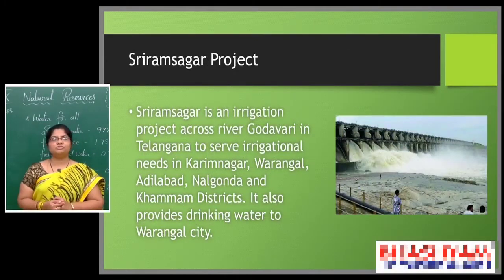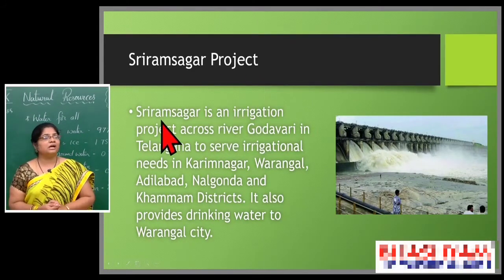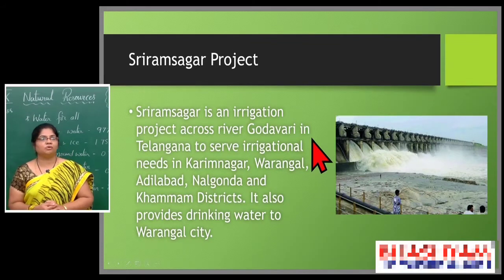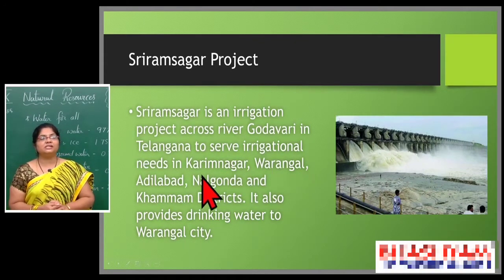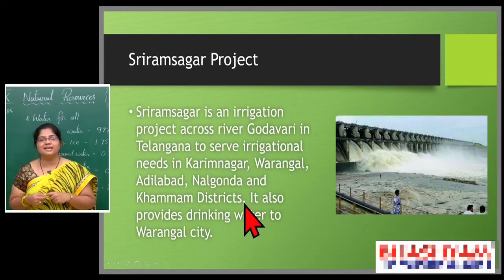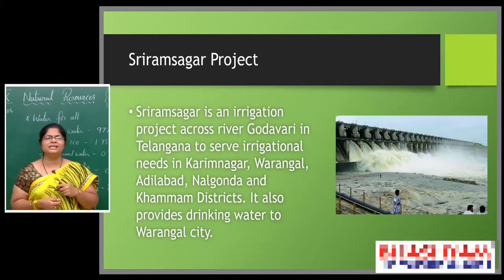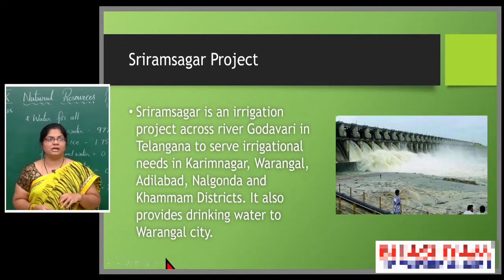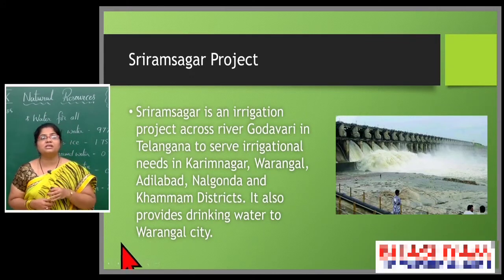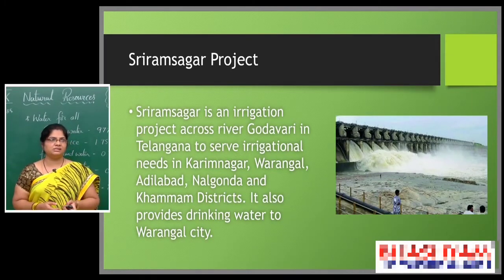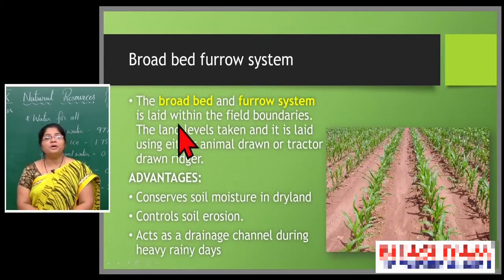One more project we can see is the Sriram Sagar project — an irrigation project across the river Godavari. In Telangana, it serves irrigation needs in Karimnagar, Warangal, Adilabad, Nalgonda, and Khammam districts. This project is highly helpful for agriculture. It is not very helpful to Andhra Pradesh since much of the water is stored before reaching there, but it benefits Telangana greatly. It also provides drinking water to Warangal city — not only for irrigation but also for domestic water supply.